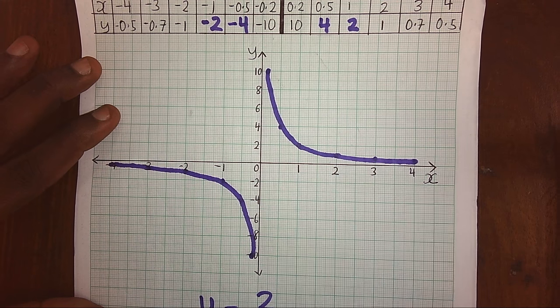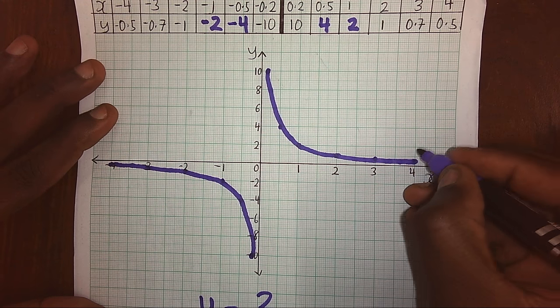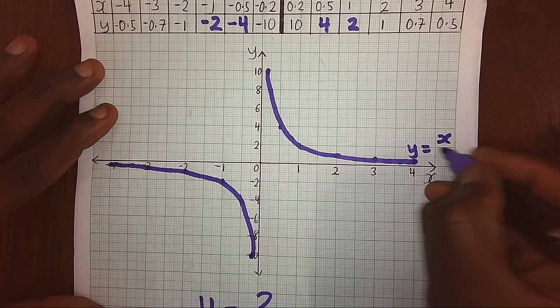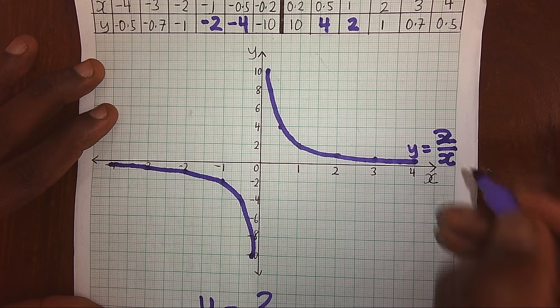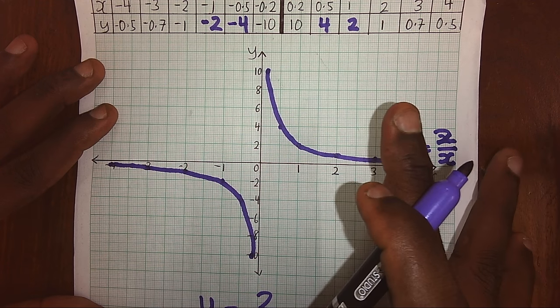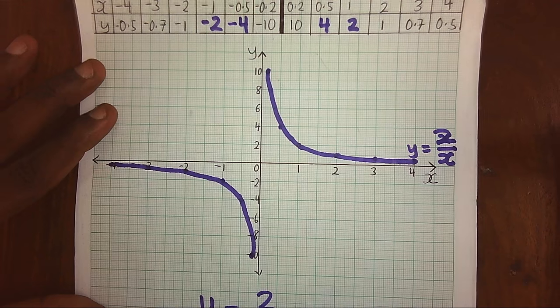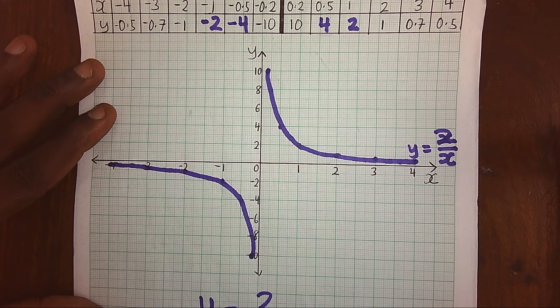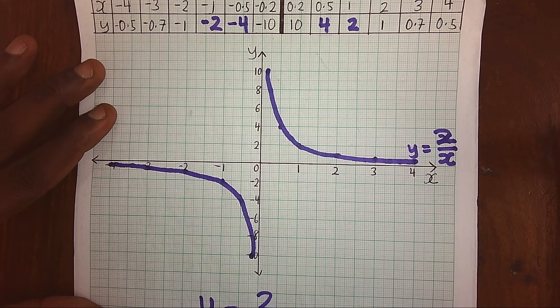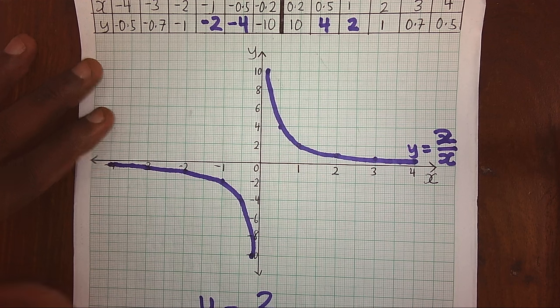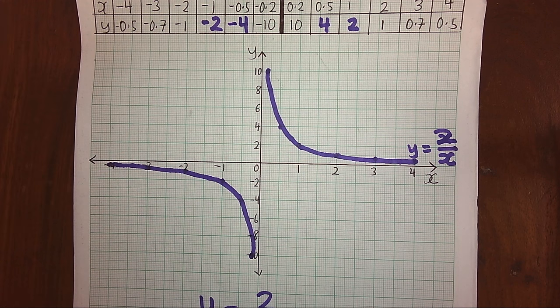Finally, we name our graph y equals 2 over x, and we shall have constructed the graph. This is how we easily construct graphs as we have discussed. If you have enjoyed, you can like my channel and also subscribe to my channel. My name is Isengoma. Thank you for watching.